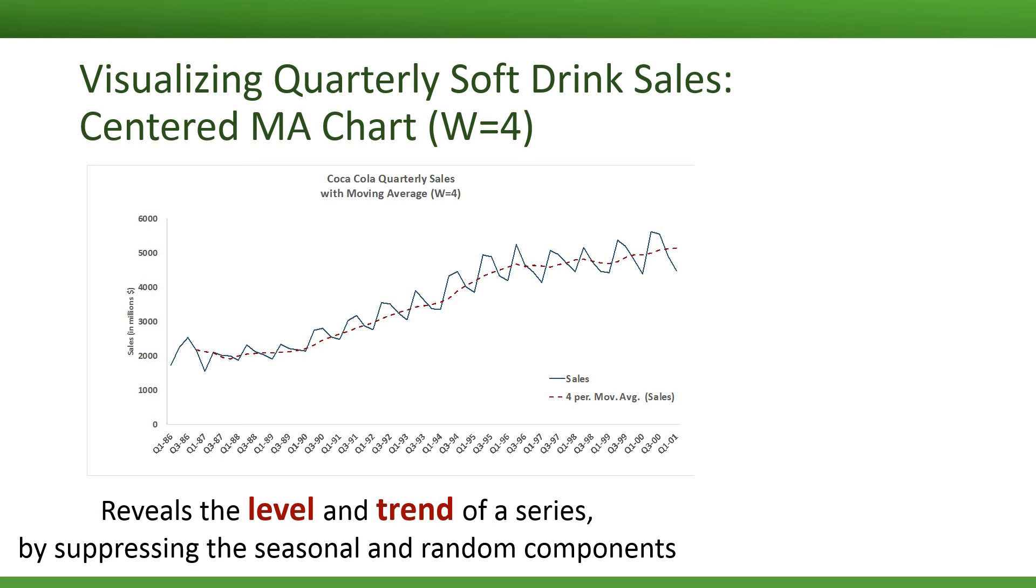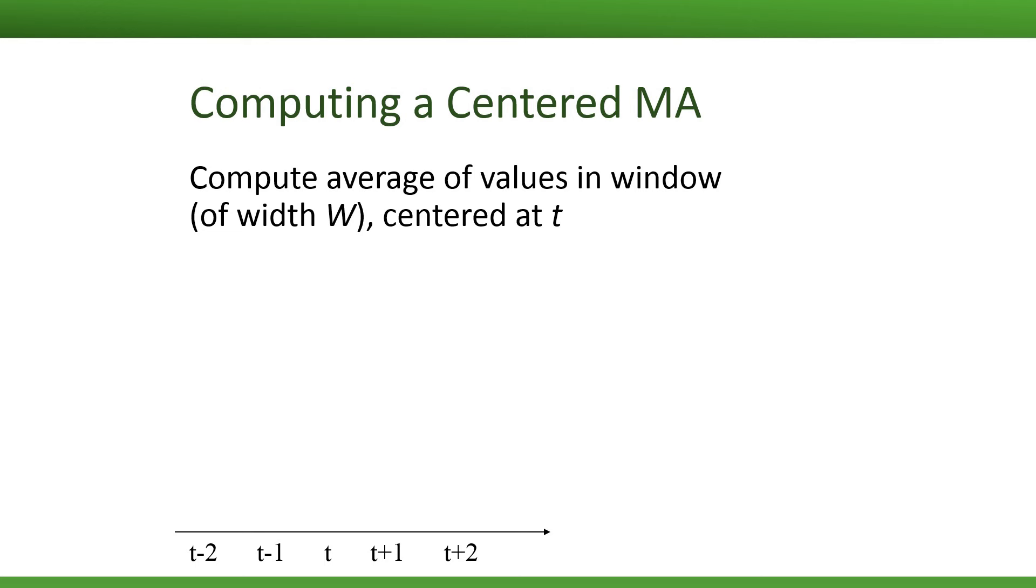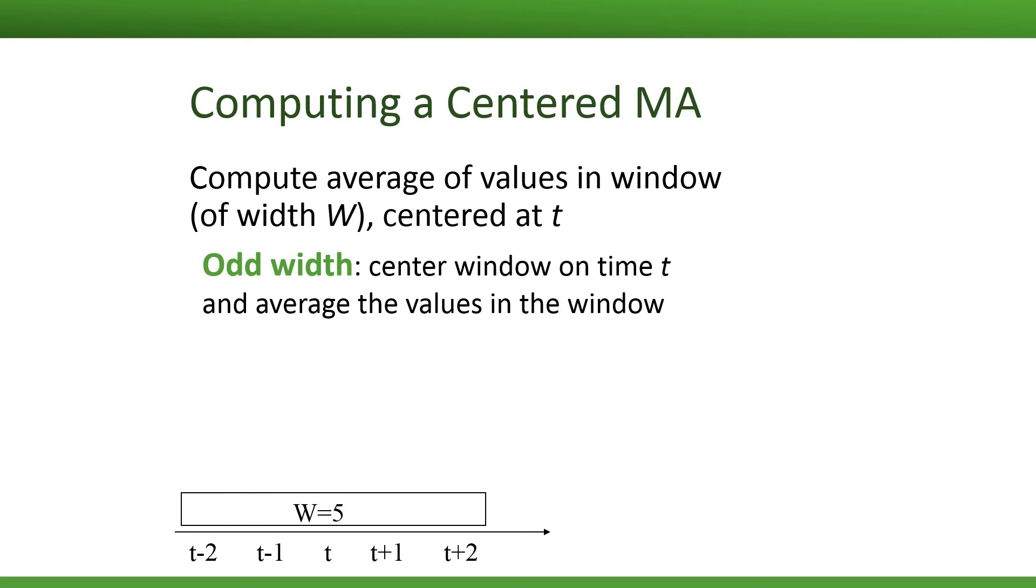So how do we create this chart? Computing a centered moving average is actually pretty simple. The idea is to compute the average of values in the window where the window is centered at time t. Suppose we're starting with a window that has an odd width, such as a width of 5. We center the window on time t, which means the window includes the periods from t minus 2 all the way up to t plus 2. We then compute the average of all the five values in this window. This gives us the moving average value at time t.